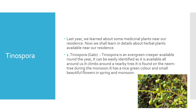Last year we learnt about some medicinal plants near our residences. Now we shall learn in detail about the herbs and plants available near our residences. Let us start with the first one, that is Tinnospora. Tinnospora is an evergreen creeper available all around the earth. It climbs around a nearby tree. It is found on the neem tree during monsoon. It has a nice green colour and small beautiful flowers in spring and monsoon. As it is evergreen, it is also known as Amruta in Sanskrit. The leaves look like nipple leaves, are hard-shaped, soft and light green. Their taste is bitter. If we crush them, they are found sticky. They fall off in winter and they provide energy.